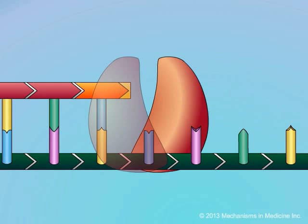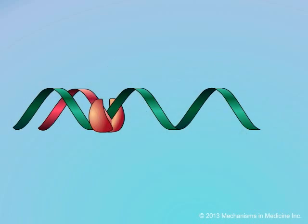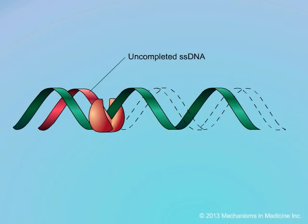Hence, this process is called chain termination. Consequently, the completion of reverse transcription cannot take place. Hence, the HIV DNA is not fully formed and cannot be incorporated into the DNA of the host cell.